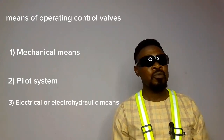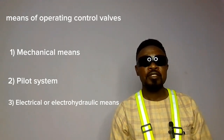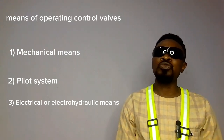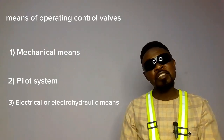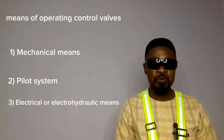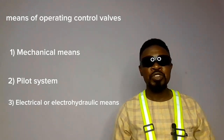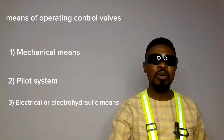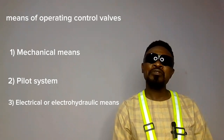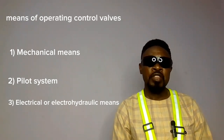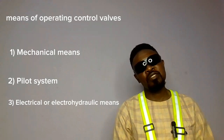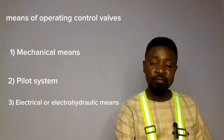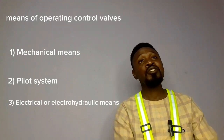How is the operator's signal sent to the control valve to achieve whatever the operator requires the machine to do? We have levers — the operator moves them right, left, forward, backwards to achieve a desired effect. There are several means through which the operator's signal is transferred to the control valve.